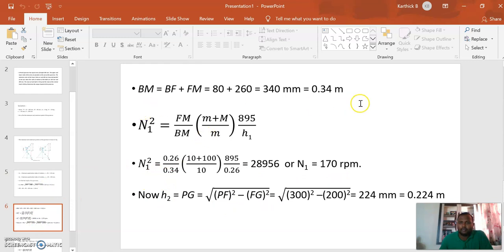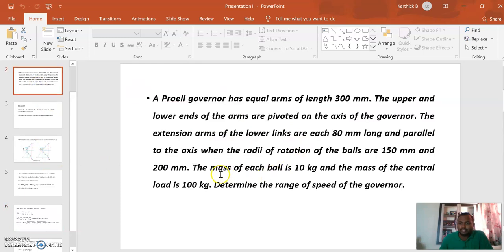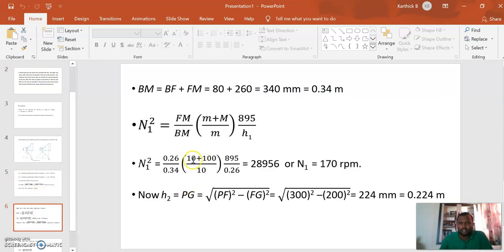FM is 0.26, BM is 0.34, mass of each ball is 10 kg, and capital M is the mass of the central load at 100 kg. Taking (10 + 100) by 10, times 895 by 0.26, we get N1 equals 170 rpm.